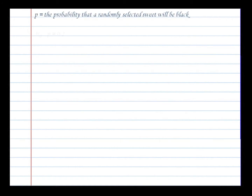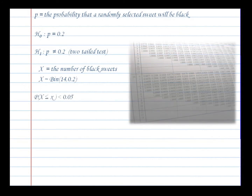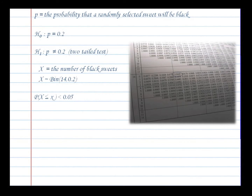P is the probability that a randomly selected sweet will be black. The null hypothesis is that P is 0.2 and the alternative is that it's not 0.2, so we need to do a two-tail test. We need to find the values of X that give us a probability less than 0.05, and using the tables we can see the only value of X is 0.